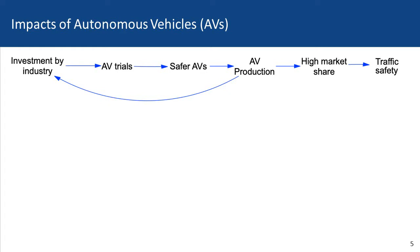The purpose of the AV trials is to develop safer AVs, which leads to AV production. After production, we hope for high market share so that consumers actually use the AVs. The intent is to improve traffic safety, since AVs are supposed to be safer drivers than humans.